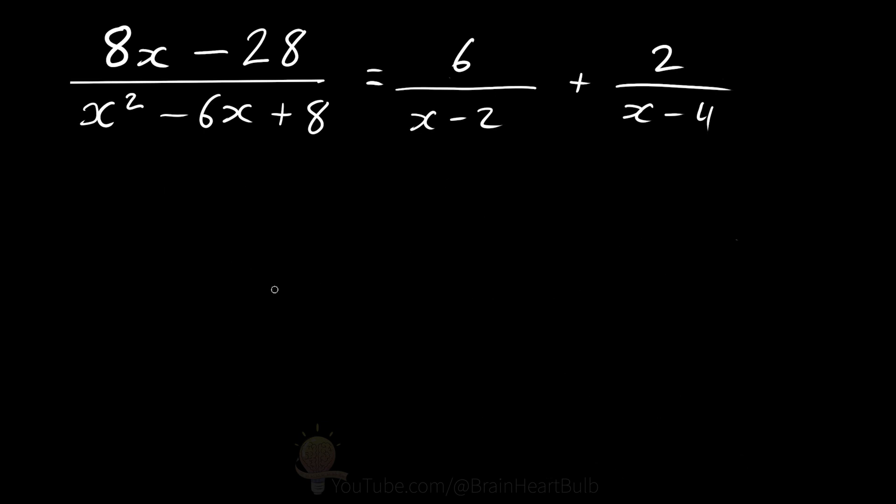Now it's always best to check our answer. So if we've got two fractions here, 6 over x minus 2 plus 2 over x minus 4, we find the lowest common multiple of the denominator, which is x minus 2, x minus 4.